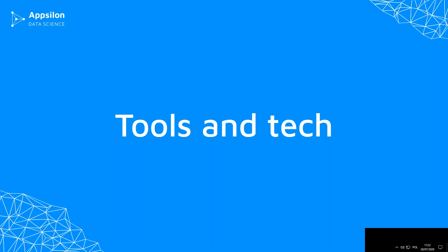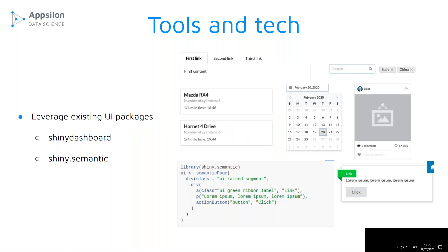So how do you actually achieve all of these things? There are two ways to go about it. The easy and quick way is to use UI packages. We're all familiar with Shiny's default UI, but you can use shinydashboard to completely change the way the application looks — some of these UI tips are already implemented in the elements shinydashboard provides. Another good package is shiny semantic, which is based on a different CSS framework and also comes with many elements that already incorporate these tips.